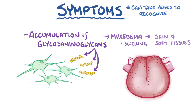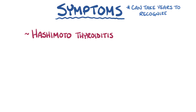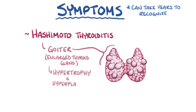If the hypothyroidism is caused by Hashimoto thyroiditis, there can be a goiter, which is an enlarged thyroid gland, because of the hypertrophy and hyperplasia of the gland.